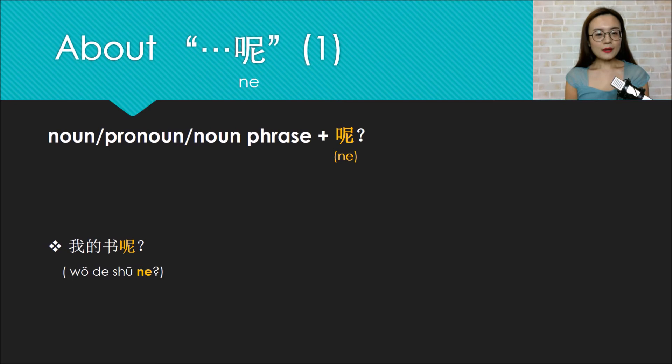Here I want to emphasize on one thing. That is, if there is no previous description in this sentence, just a noun or pronoun or noun phrase plus ne question. For example, wo de shu ne? What does that mean? Okay, remember, if there is no previous description, this kind of question is asking only location, like where is. So wo de shu ne means where is my book?